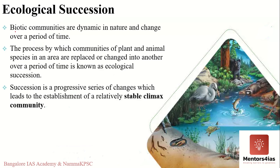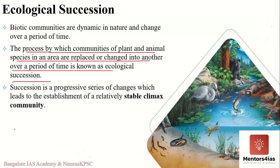Ecological succession refers to the process by which the structure of a biological community evolves over time. For example, take a forest — the tropical wet evergreen forests along the Western Ghats. Do you think the forests have always been there, or did they evolve over a period of time from a barren piece of land? It took hundreds of years for the forest to develop, and this process is known as succession — the steady and gradual change in species of a given area with time and changing environment.